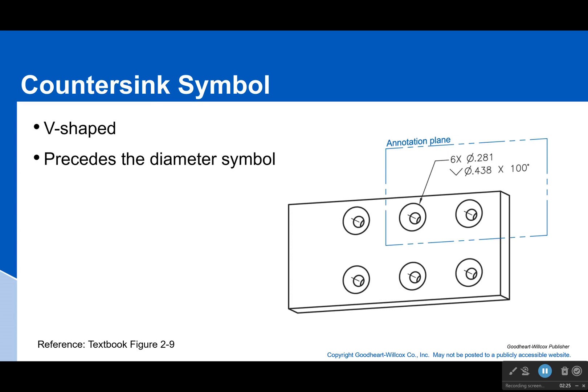Okay, countersink symbol. It's a V, which makes sense because if you look at countersink, it kind of looks like a V. Bring it in, it touches - there's the V. It precedes the diameter symbol. And then what you'll have right after that is an angle, usually an angle that tells you exactly what the angle of that surface is when I'm going right here. What is the angle? Well, it's a hundred degrees.